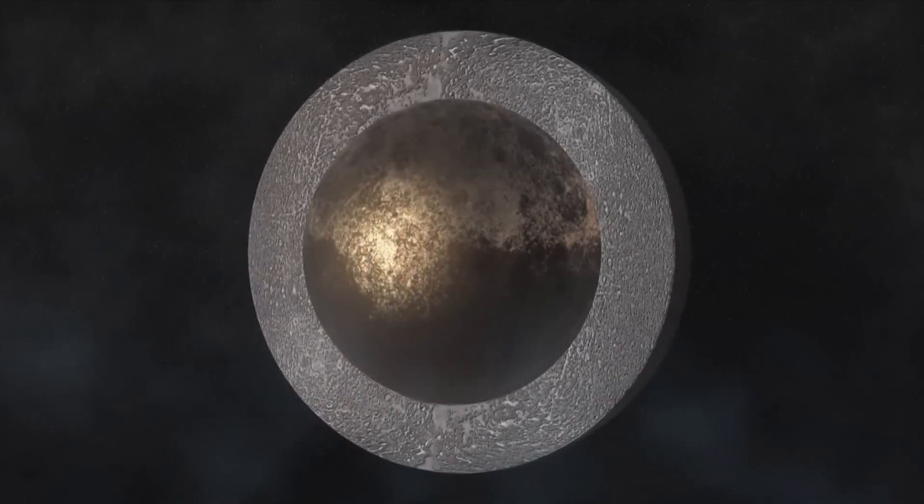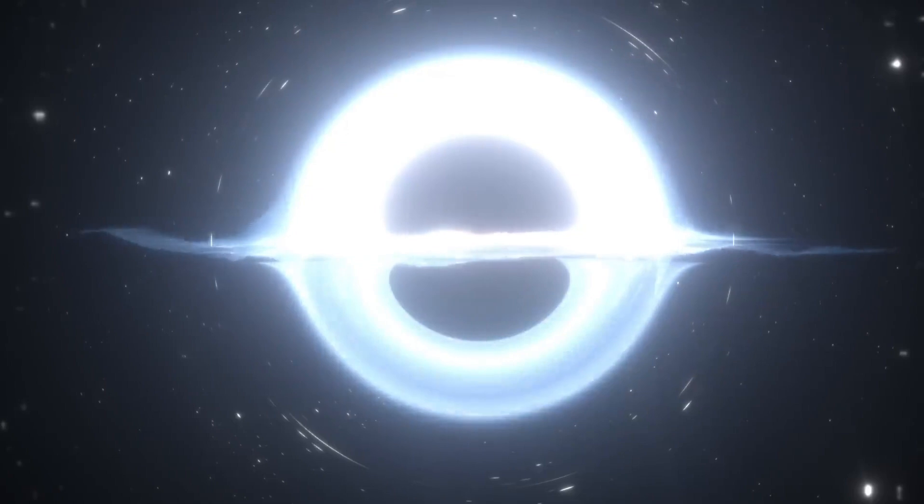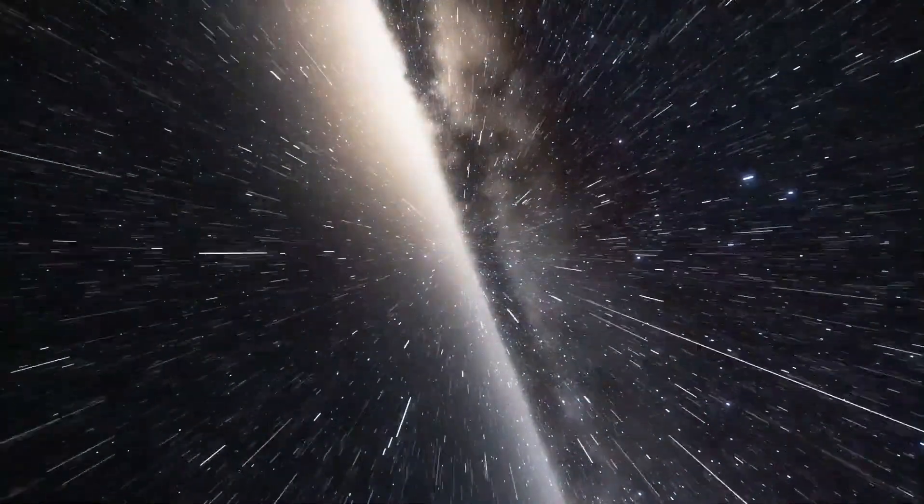Triton's surface is covered in frozen nitrogen, and it has active geysers that eject water vapor into space, hinting at possible subsurface oceans. This makes Triton one of the most interesting moons for scientists studying the potential for life beyond Earth.